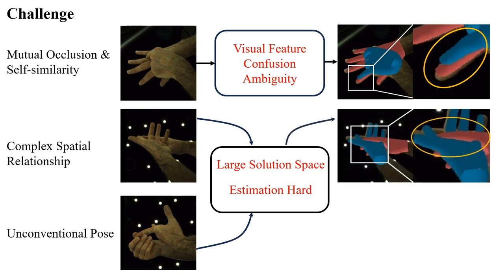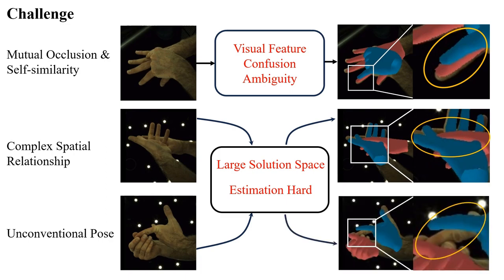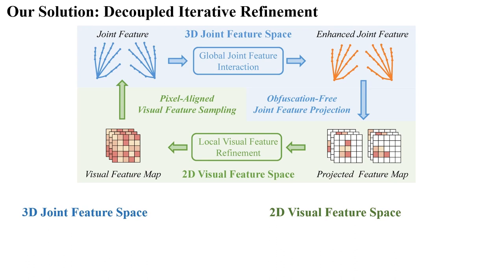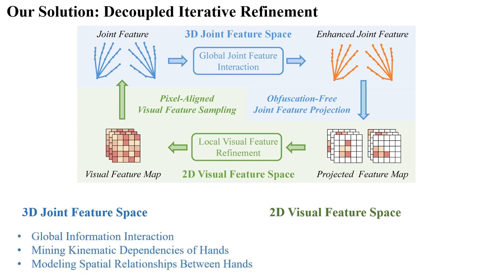To address these problems, we propose a Decoupled Iterative Refinement framework. Its insight is to solve these two core challenges in two feature spaces with different properties. We define a 3D joint feature space and a 2D visual feature space. In the 3D joint feature space, we perform global information interaction between the two hand joints.